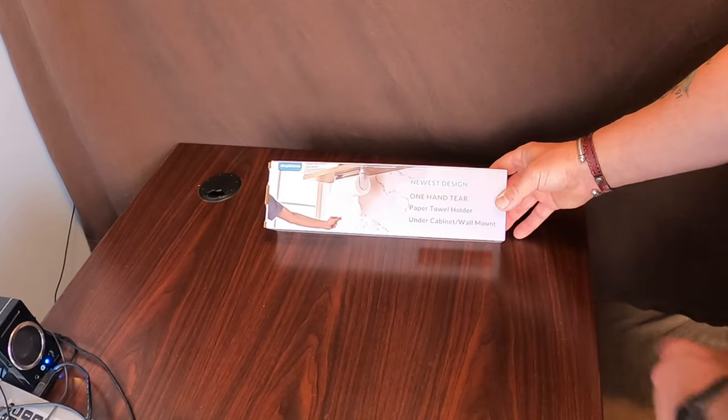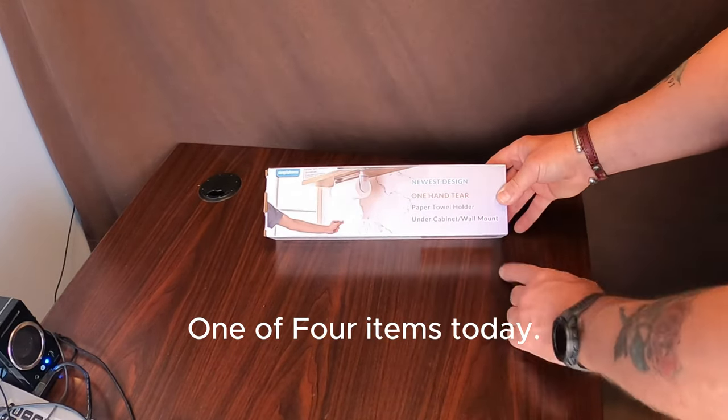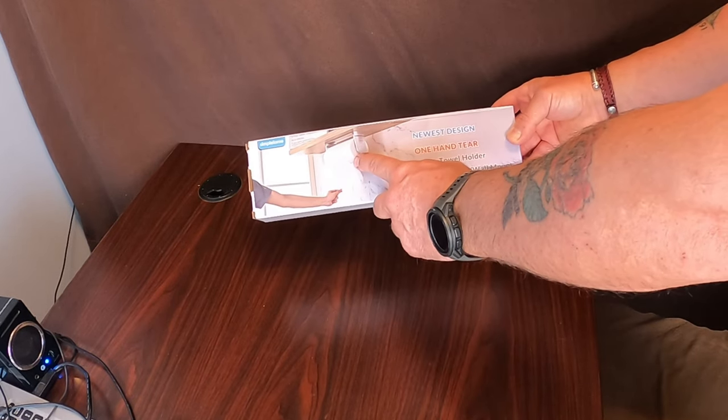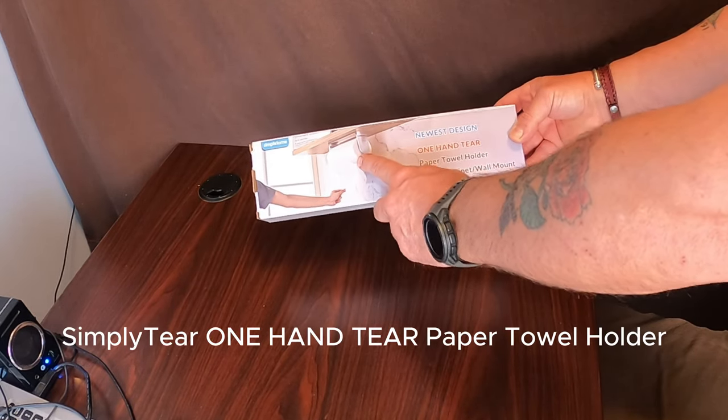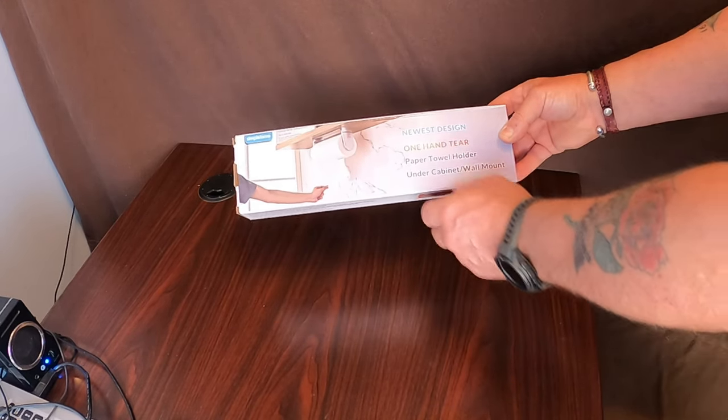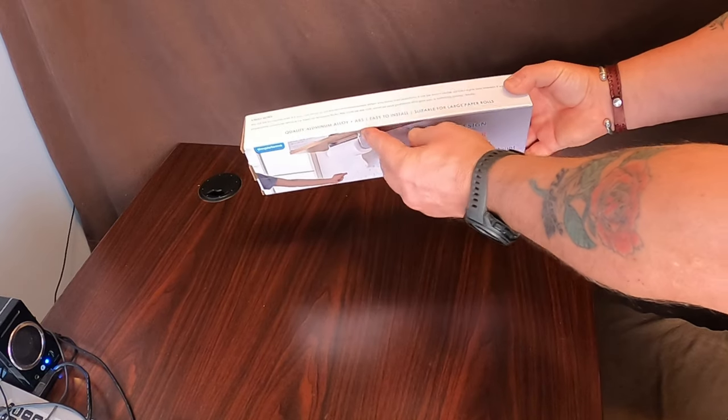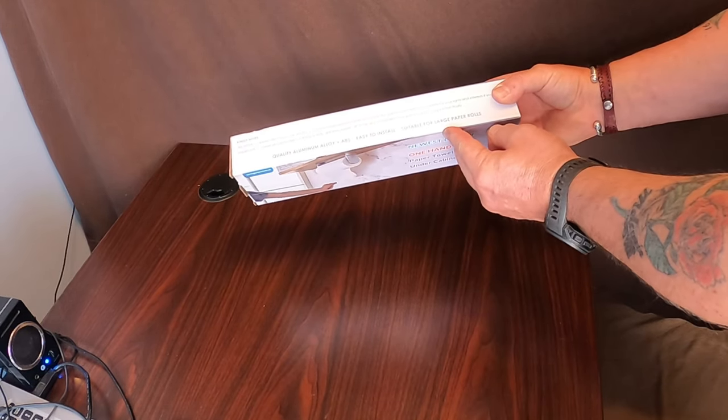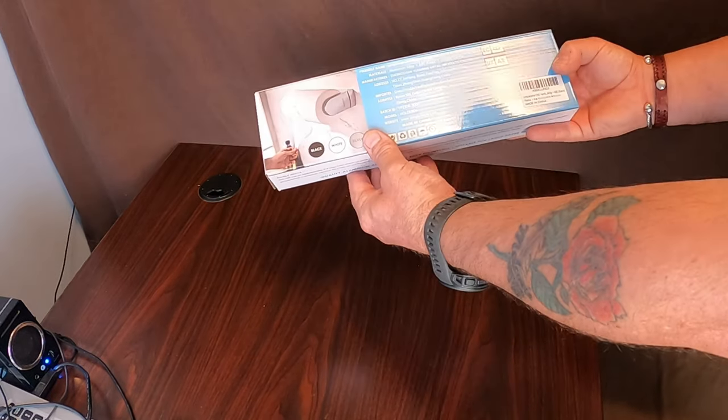Okay, the next product I have is from Simple to Me. It's a one-hand tear under cupboard paper towel holder, under cabinet or wall mount, quality aluminum and ABS, easy to install, stable for large paper towels. We'll open it up and see what's inside.